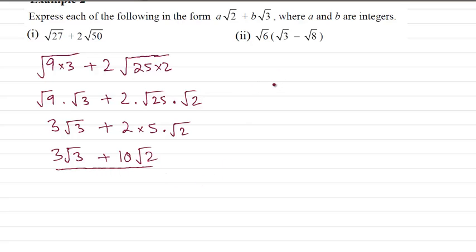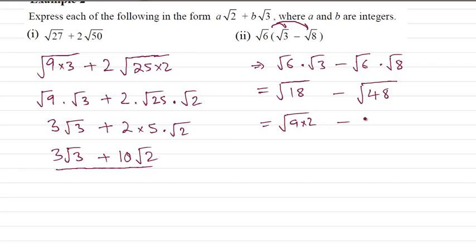We can use two methods. First we just multiply them together like that, so we have root 6 times root 3 and minus root 6 times root 8. This time we combine them under one square root, so 6 times 3 is 18. Here 6 times 8 is 48. This is 9 times 2, this is 16 times 3. Now we split, take the square root of 9 and take the square root of 16.